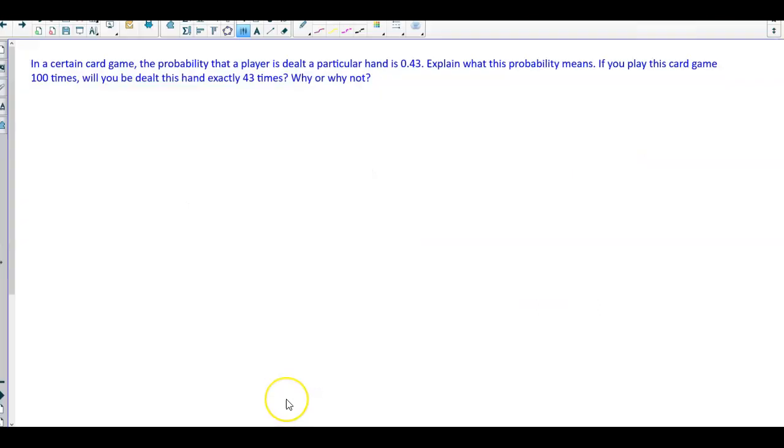Okay, so from the lecture, recall that we can convert this 0.43 to a percent. That's multiplying it by 100 percent to give us 43 percent, which then gives us 43 out of the 100 that they're talking about.